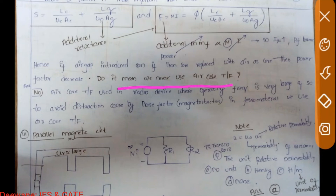To avoid destruction by noise, we use ferrite core material. Air core transformers are used in radio devices where the operating frequency is very large, and to avoid destruction caused by noise and magnetostriction, we use air core or ferrite core transformers.